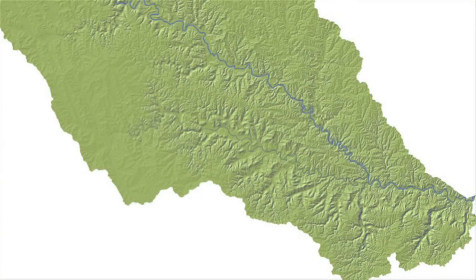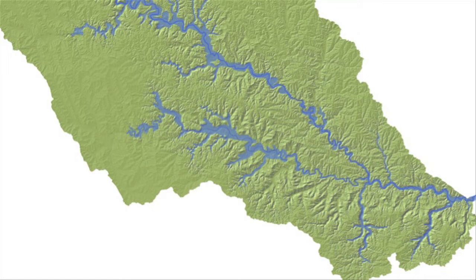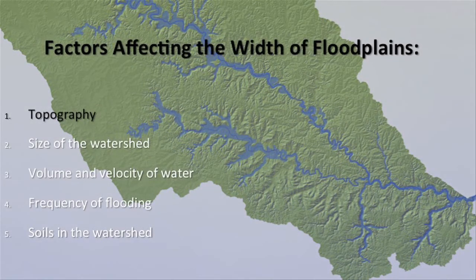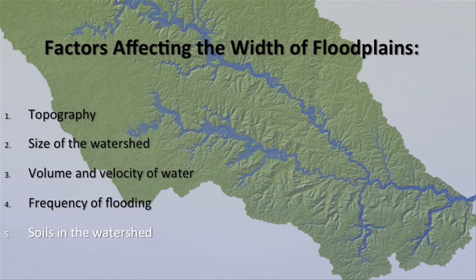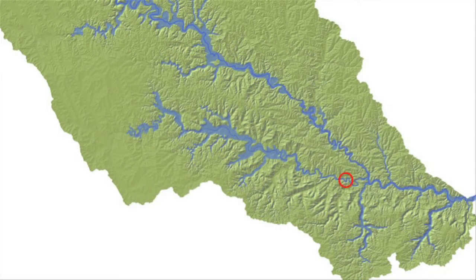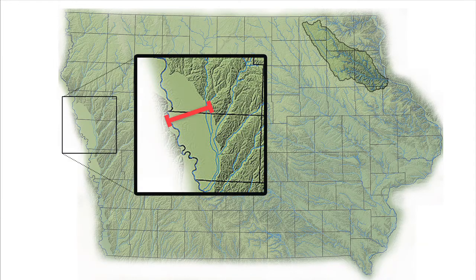Floodplains are a natural feature of rivers. They form due to the actions of the water carried downstream by the river. During a flood, water leaves the main river channel and inundates the land areas adjacent to the river. The width of a floodplain depends on many factors, including topography, the size of the watershed being drained by the river, the volume and velocity of water carried by the river, the frequency of flooding, and the nature of the soils found in the watershed. Floodplains may be as narrow as a few hundred feet, or as wide as many miles for larger rivers such as the Missouri and the Mississippi.